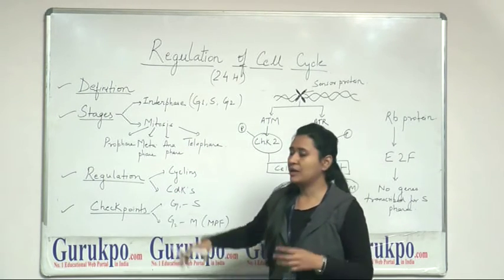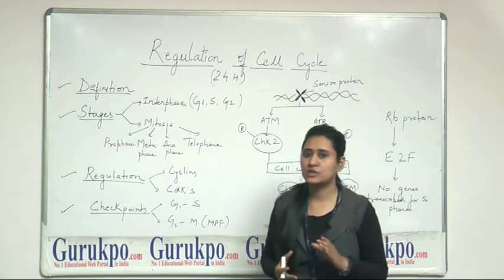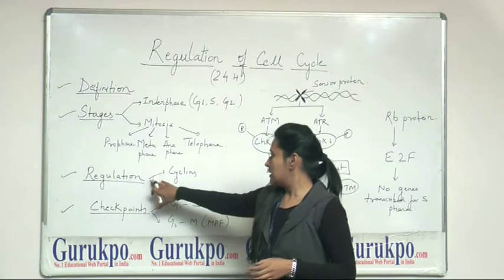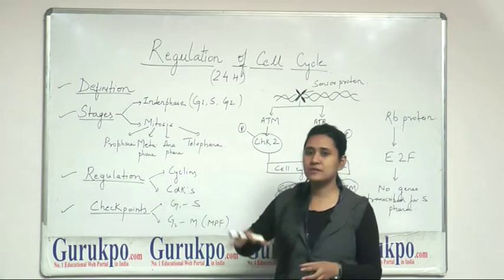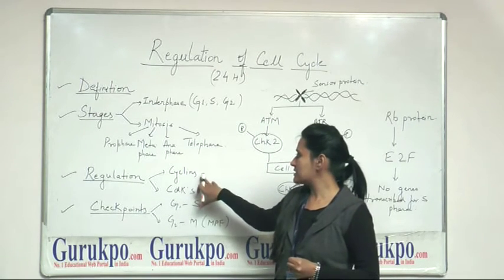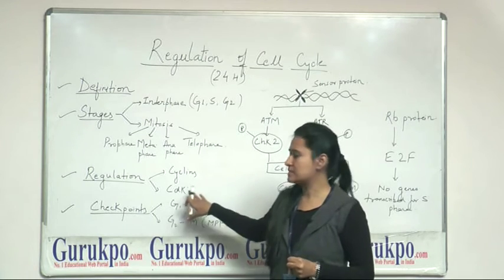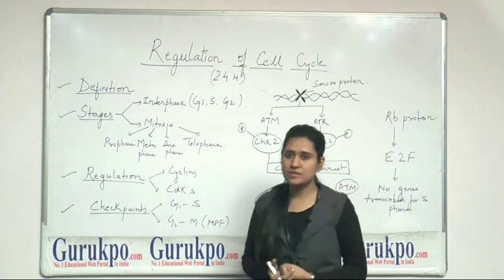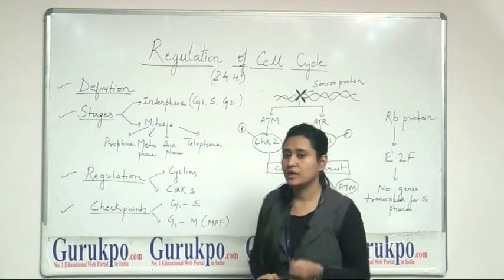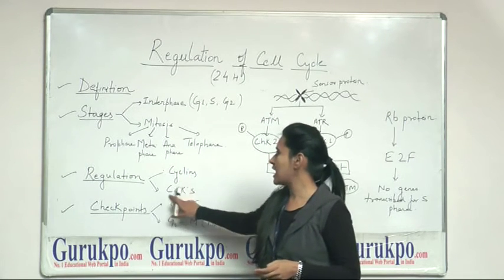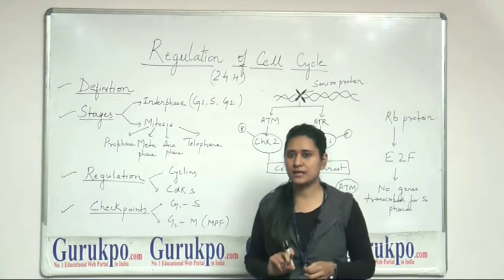Now, we will talk about the regulation. How a cell cycle actually regulates? There are two main important things which help in its regulation. First is cyclins and another is CDKs. Cyclins are regulatory subunits, whereas the CDKs are the catalytic subunit. The combination of these two helps in the regulation of cell cycle.